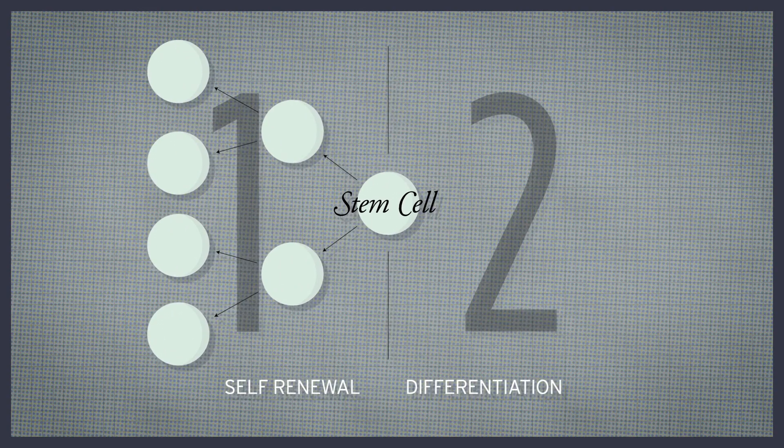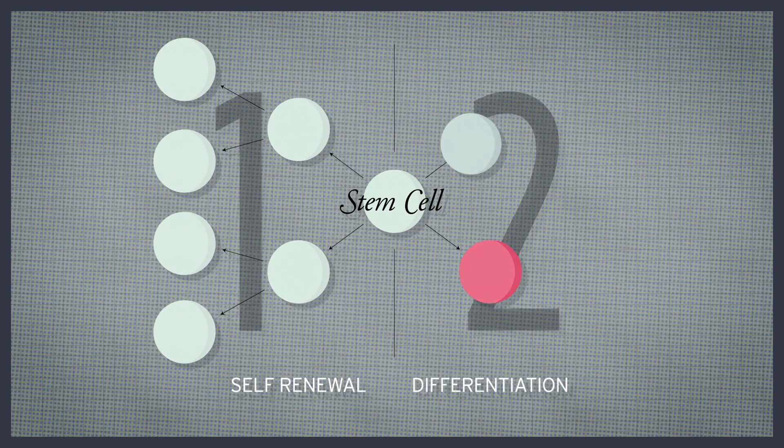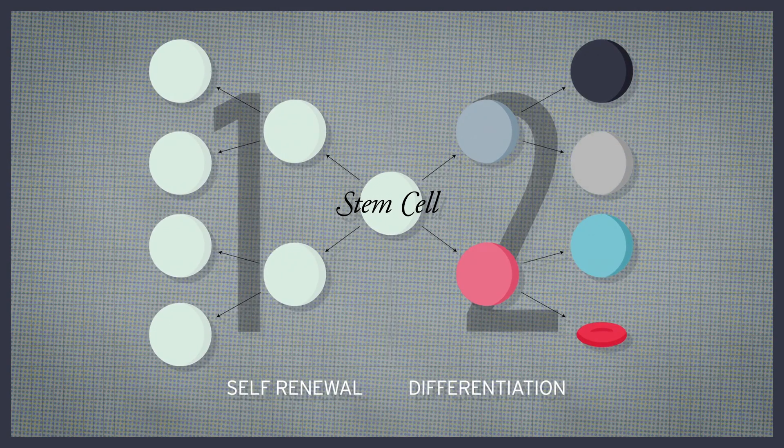Second, it must be able to differentiate. In other words, it must be able to divide and give rise to specialized cells.